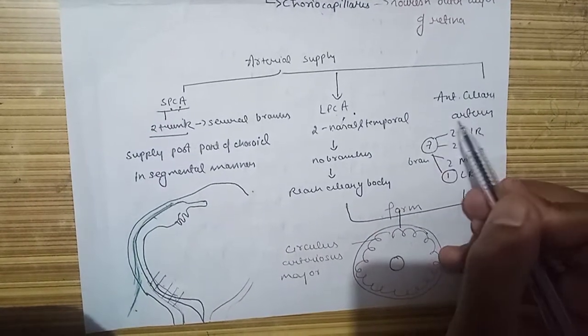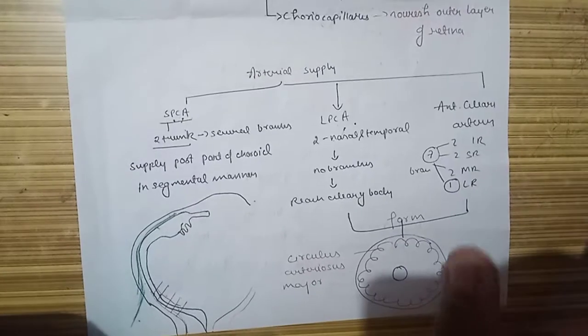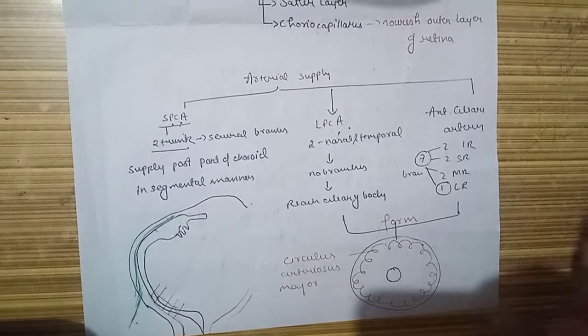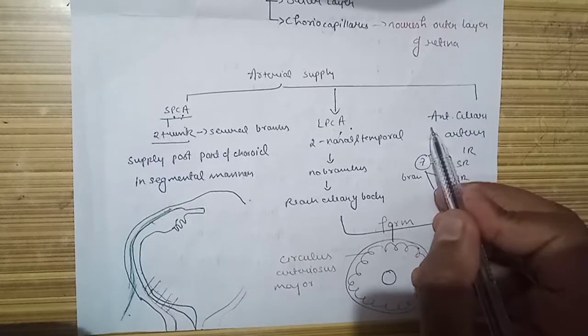The anterior ciliary arteries are derived from our muscular branches. If you want more detail on this, watch the ophthalmic artery video—this will make it a lot easier.